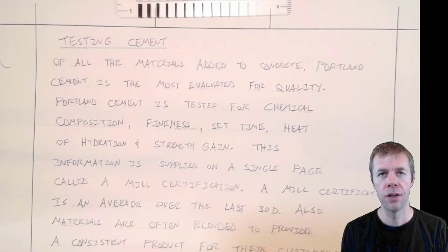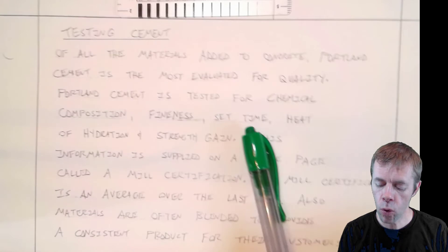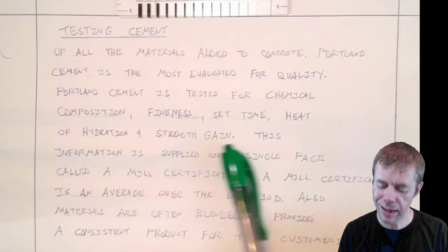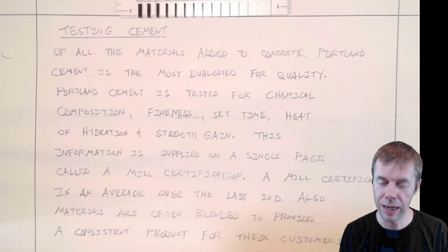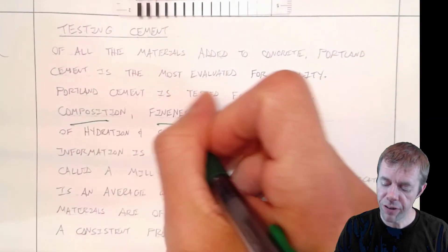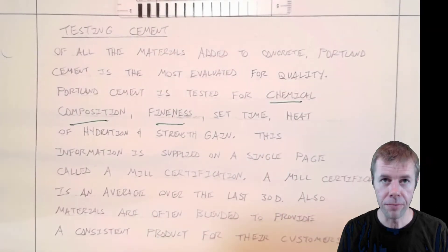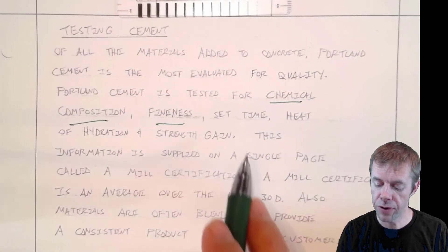Of all the materials in concrete, cement is by far the most tested ingredient, the most evaluated. Portland cement is tested for chemical composition, fineness, set time, heat of hydration, and strength gain. In this first part, I'll be talking about chemical composition and fineness. In part two, we'll be talking about set time, heat of hydration, and strength gain.